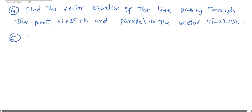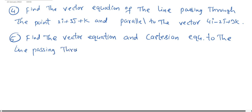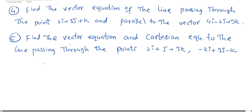And fifth/sixth question: Find the vector equation and Cartesian equation of the line passing through the points 2ī + j̄ + 4k̄ and −4ī + 3j̄ − k̄.